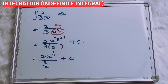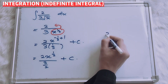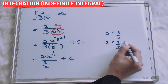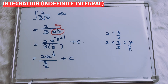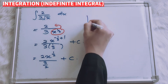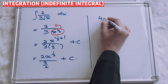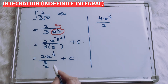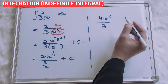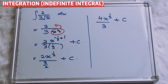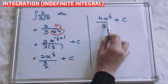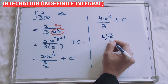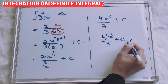How to settle this? Remember: 2 divided by 3 over 2 — switch to multiply — you will have 4 over 3. So 2 times 2 is 4, giving you 4x to the power of half over 3. Now, 4x over 3 plus C. That's the answer.